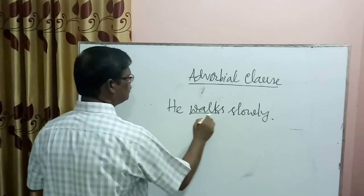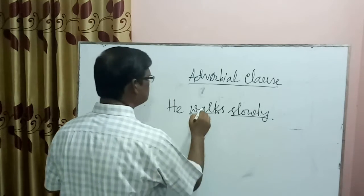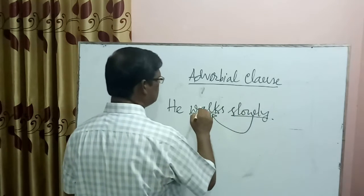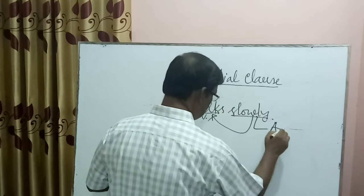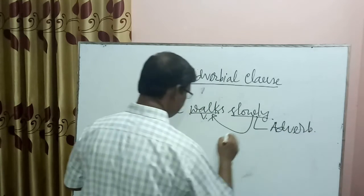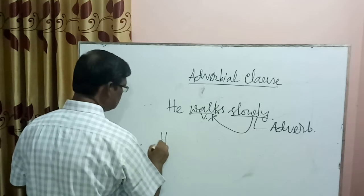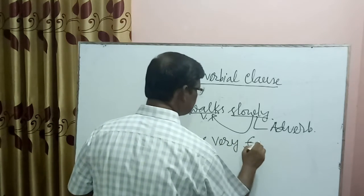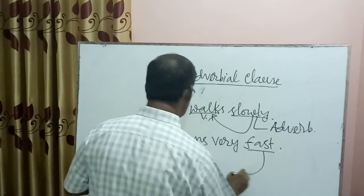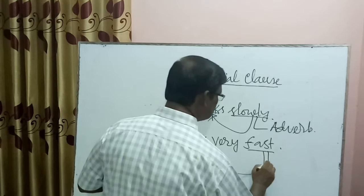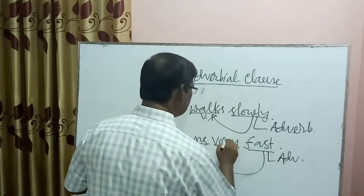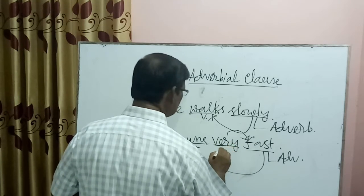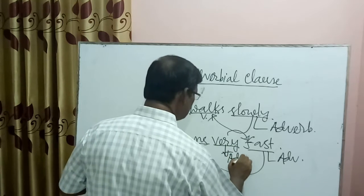For example: 'He works slowly.' Here 'works' is a verb. How does he work? Slowly. So the word 'slowly' qualifies the verb 'works' — that is Adverb. Another example: 'He runs very fast.' Here 'fast' qualifies the verb 'run', so 'fast' is Adverb. And 'very' qualifies 'fast' — how fast? Very fast. So 'very' is also Adverb.